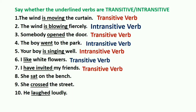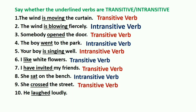'She sat on the bench.' She sat what? No answer. She sat whom? No answer. So this is an intransitive verb. 'She crossed the street.' She crossed what? The street — you are getting an answer, so this is a transitive verb. Last sentence: 'He laughed loudly.' You are getting an answer to 'how,' but not to 'what' or 'whom,' so this is an intransitive verb.